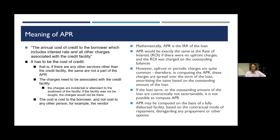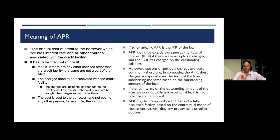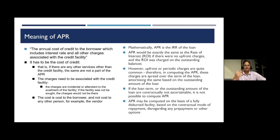Anything coming as a cost of credit — whether one time, multiple times, expressed as an absolute number, or expressed as a percentage — as long as it relates to cost of credit, it would form part of the APR. This even includes third-party charges. Even if the charges are payable to third parties, with or without a markup by the lender, as long as they are being recovered by the lender as a necessary, attendant, or incidental cost of the granting of credit, it would still form part of the APR.